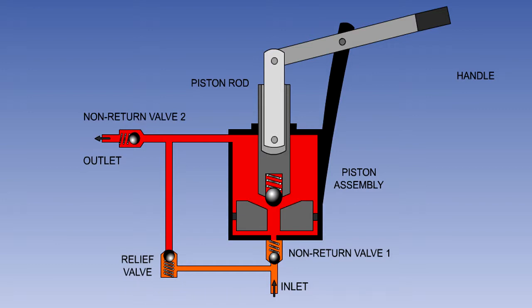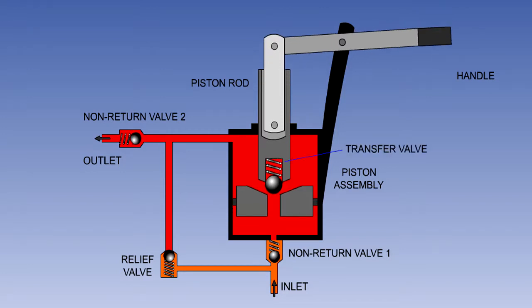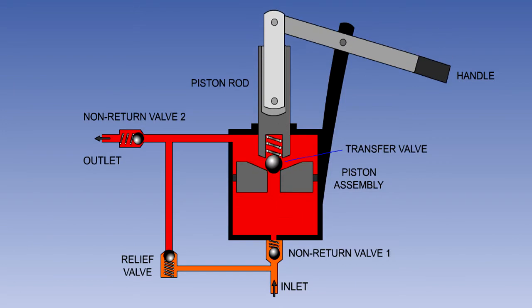Once the piston reaches the bottom of its travel, the handle will now be moved in the opposite direction, moving the piston assembly up again. As the piston moves up, the pressure above it will increase.